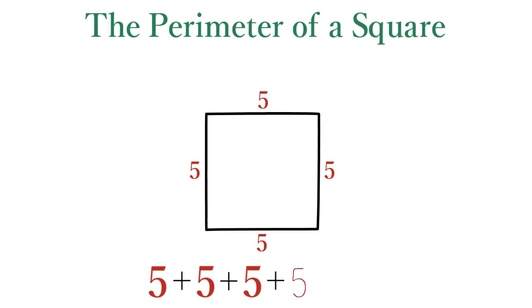For example, to calculate the perimeter of a square whose side equals 5, simply add the number 5 to itself 4 times, so the perimeter equals 20.